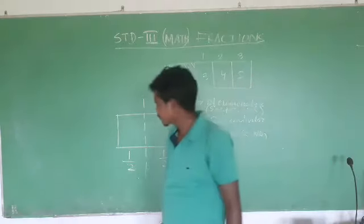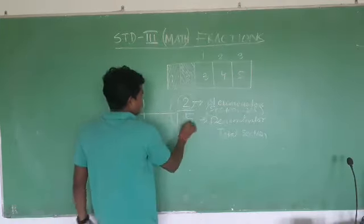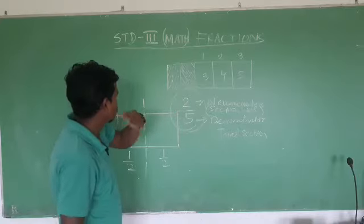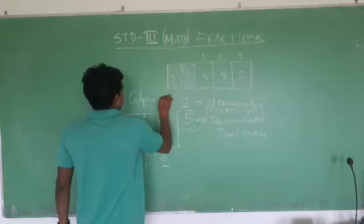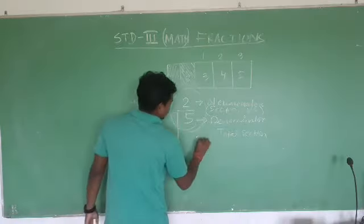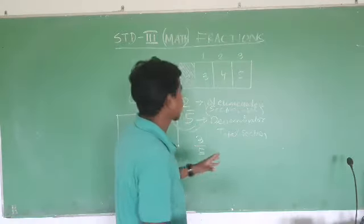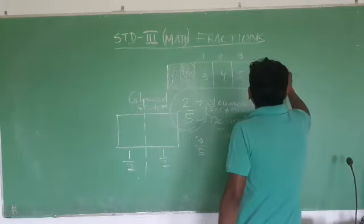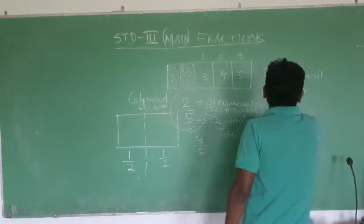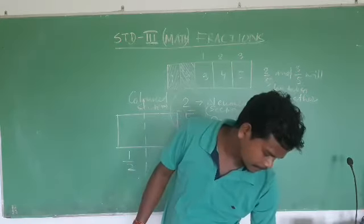Next. Here of this, in this section, here we learn that, 2 by 5 is the colored section. And remaining are 3. So, 3 fraction will be 3 by 5. So, 2 by 5 and 3 by 5 will be taken together. Similarly, we have some fractions. You will be given some figures.